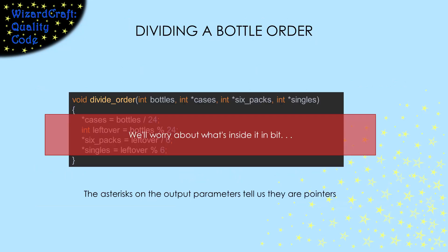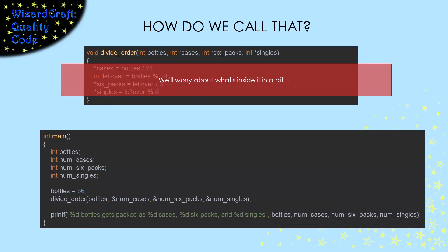This is our function declaration. I have one input parameter that is the number of bottles we want. Then these parameters are all declared to be pointers. That tells us that they are output parameters. Before we look at how that function works, let's look at how we use it.